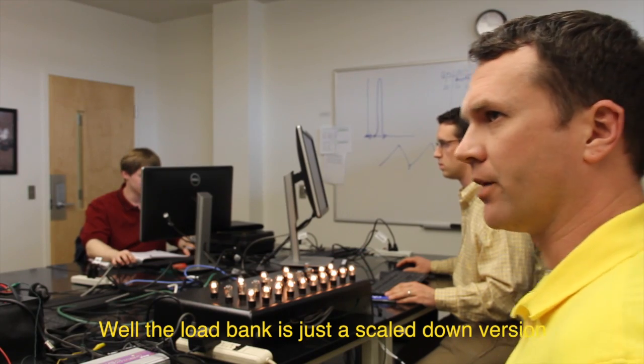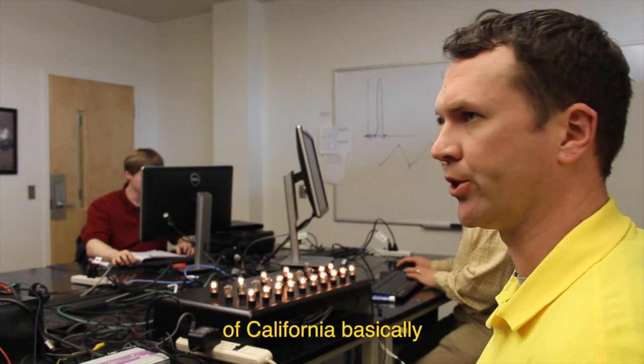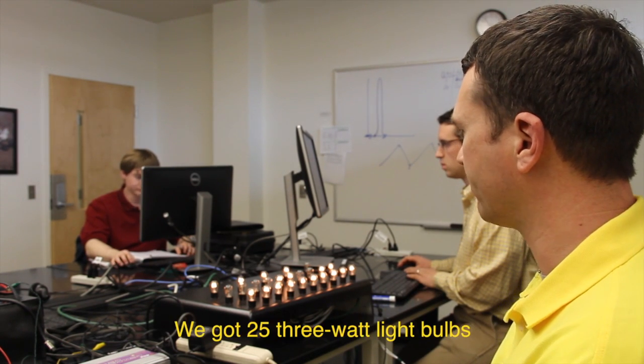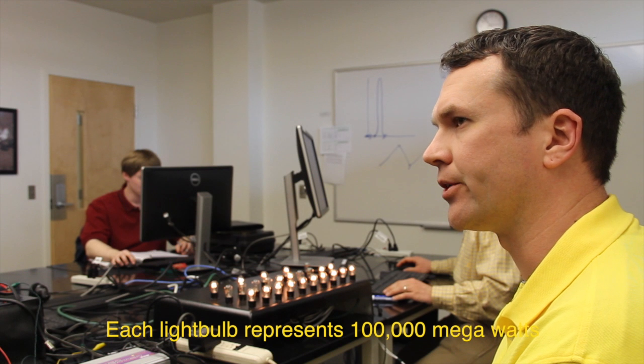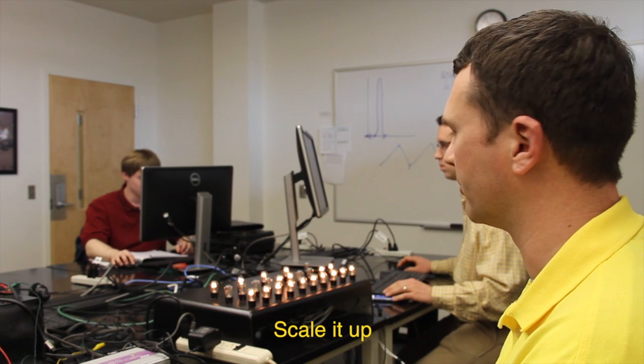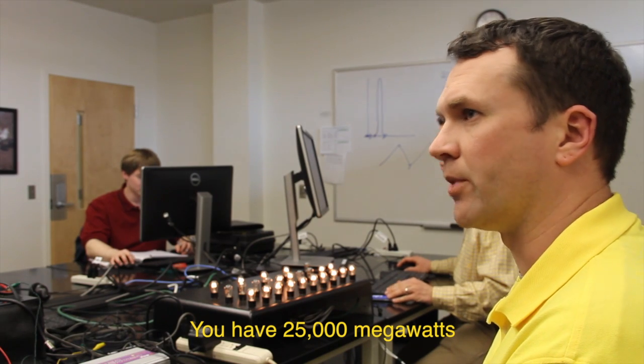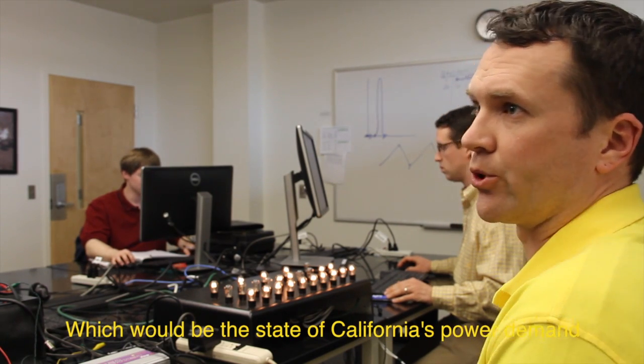The load bank is just a scaled-down version of California, basically. We've got 25 3-watt light bulbs. Each light bulb represents 100,000 megawatts. To scale it up, we've got 25,000 megawatts, which would be the state of California's power demand.